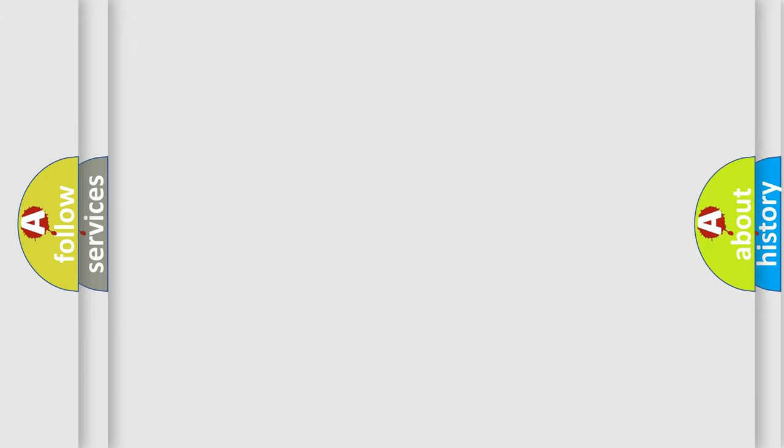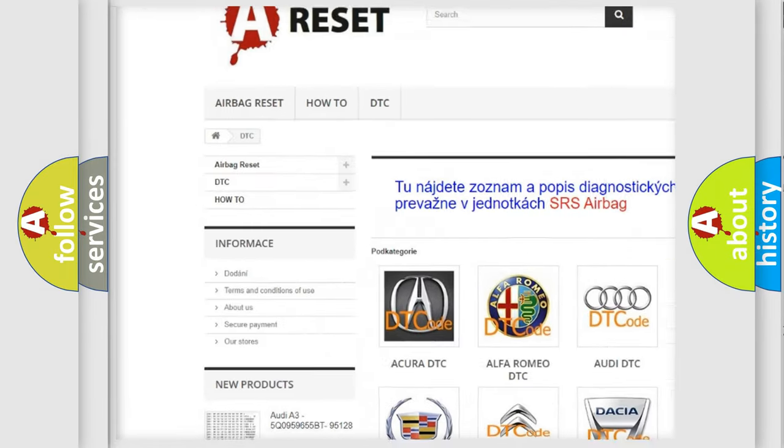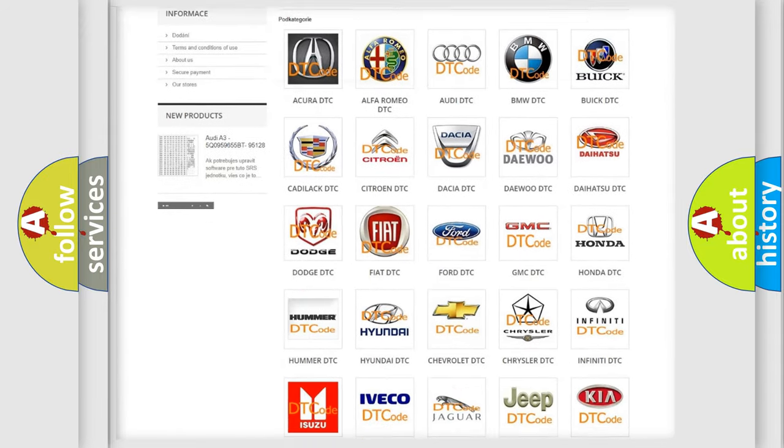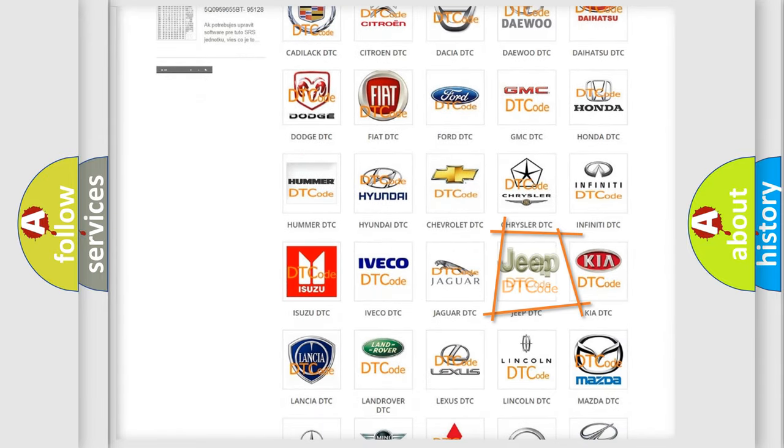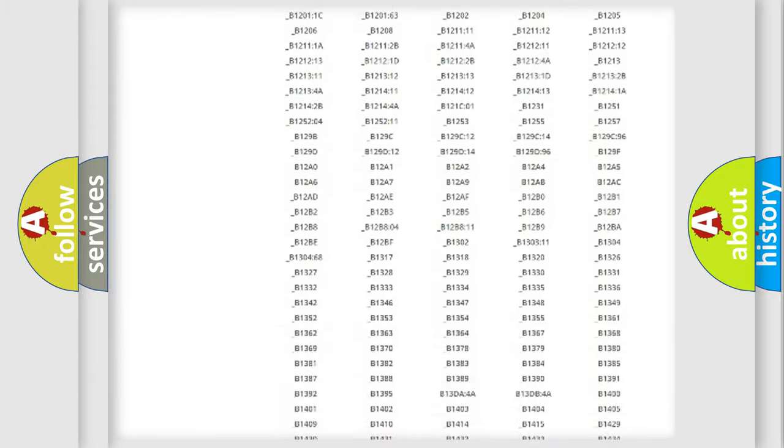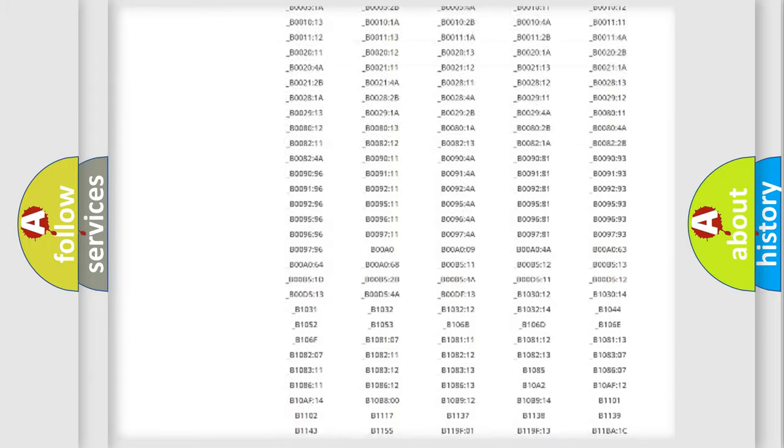Our website airbagreset.sk produces useful videos for you. You do not have to go through the OBD2 protocol anymore to know how to troubleshoot any car breakdown. You will find all the diagnostic codes that can be diagnosed in a Jeep vehicles.